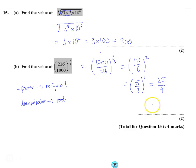So the answer is 25 over 9. You have to take it step by step, do one bit of the power at a time. It doesn't matter which order you do it in.